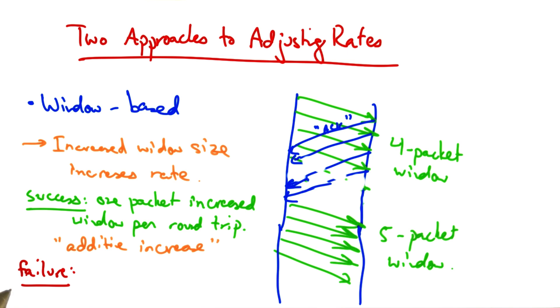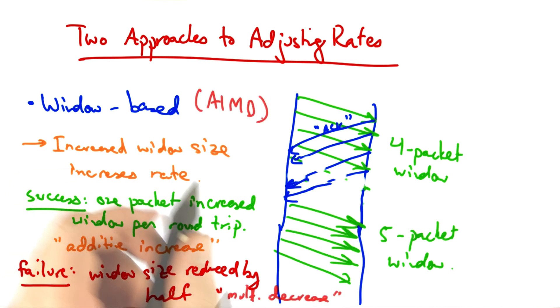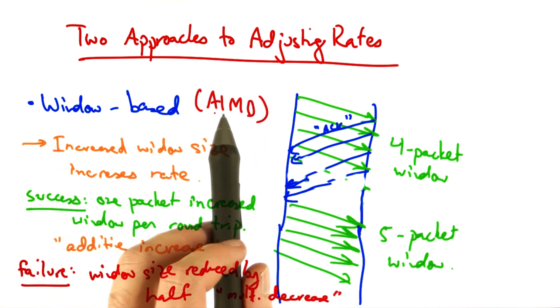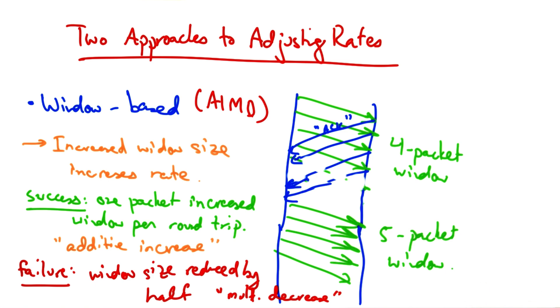If a packet is not acknowledged, the window size is reduced by half. This is called multiplicative decrease. So TCP's congestion control is called additive increase multiplicative decrease, or AIMD.